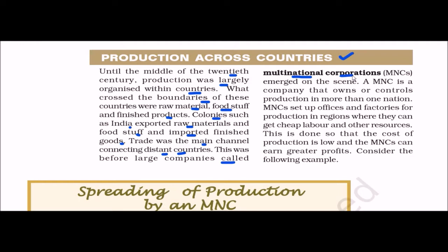Before the concept of Multinational Corporations (MNCs) came into existence, production was done largely within the country. What crossed boundaries were raw materials, food stuff, and finished products. After the emergence of MNCs, the definition changed: an MNC is a company that owns or controls production in more than one nation. Any company which has its operations or production in more than one nation is called an MNC.